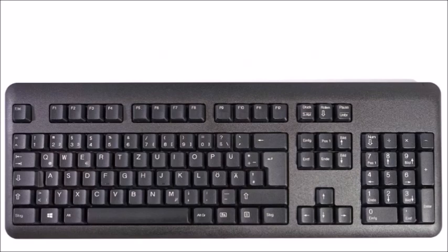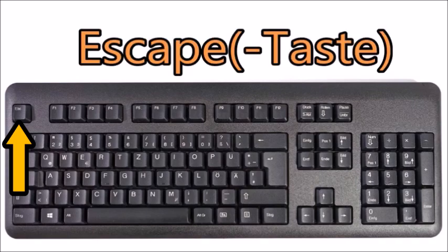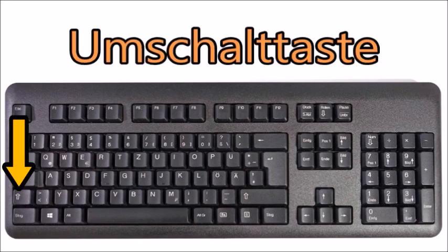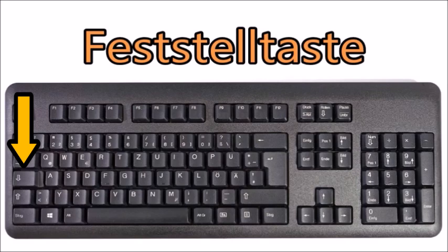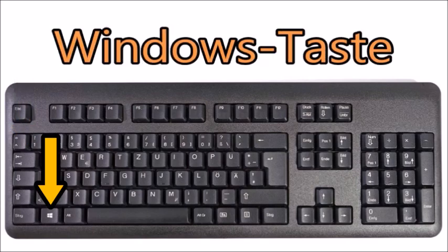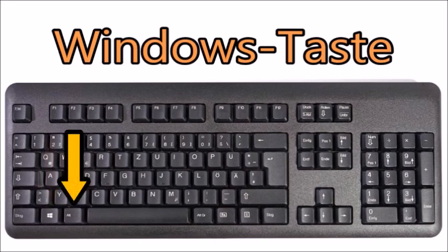Let's start with the keys for special functions. On the top left we have the Escape key — it is one of the few keys that don't have a German name; it is simply called Escape or Escape-Taste. The Control key is called Steuerung or Strg. The Shift key is called Umschalttaste, but most people use the English name. Caps Lock is called Feststelltaste, though many people also understand 'Caps Lock.' Tabulator is called Tabulator. The Windows key is called Windows-Taste. Alt is called Alt.